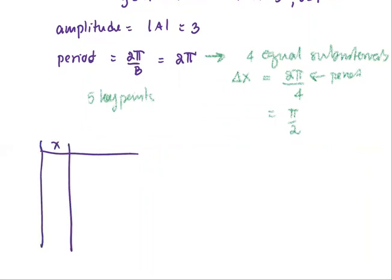So for x starting from 0, and then the increment π/2, the next is π, then 3π/2, and the last point will be 2π. The function is y equals 3 sin x.